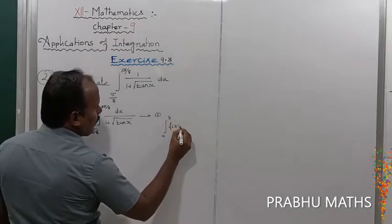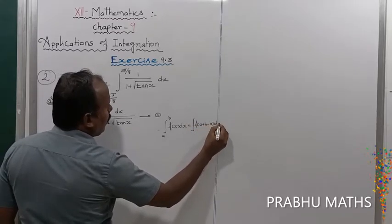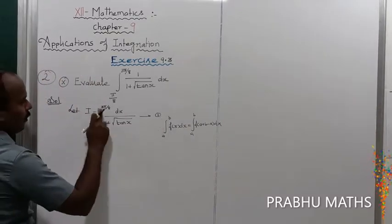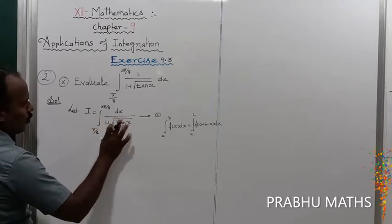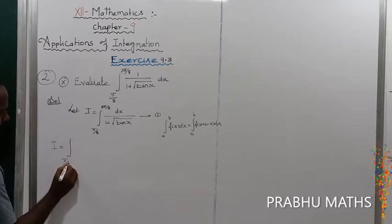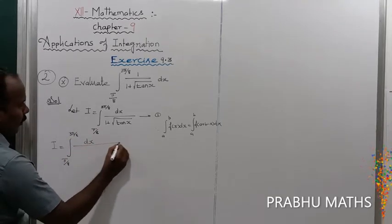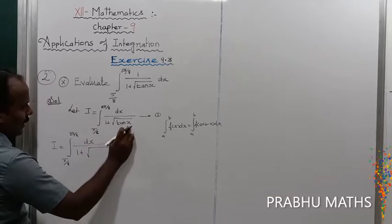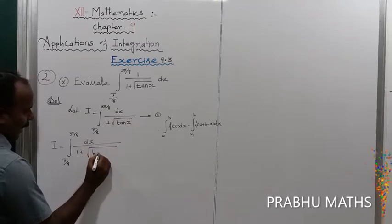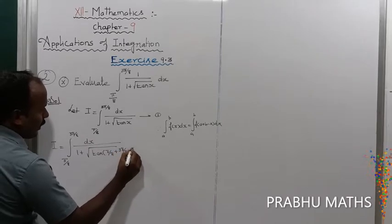Next, by using the property: integral from a to b of f(x) dx equals integral from a to b of f(a + b − x) dx. Here a is replaced by π/8 and b is replaced by 3π/8. So I equals integral from π/8 to 3π/8 of dx divided by 1 plus root of tan(π/8 + 3π/8 − x).